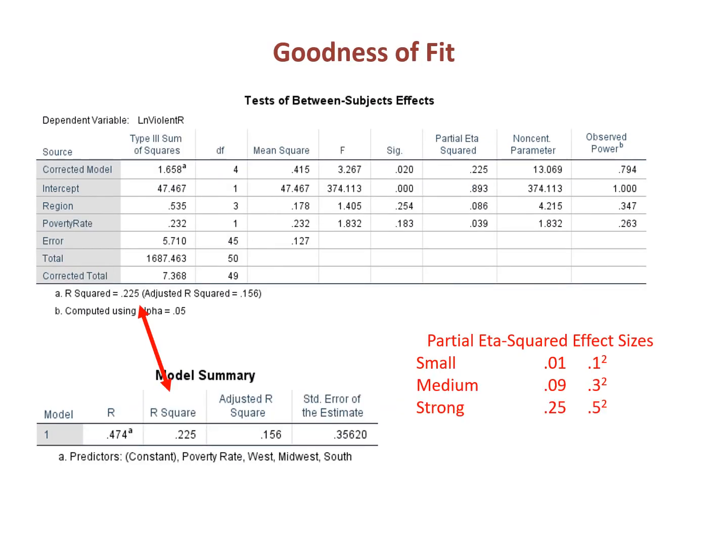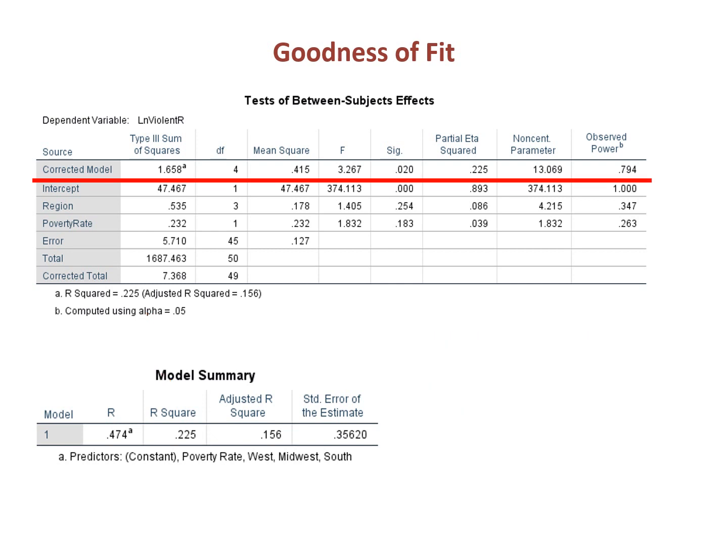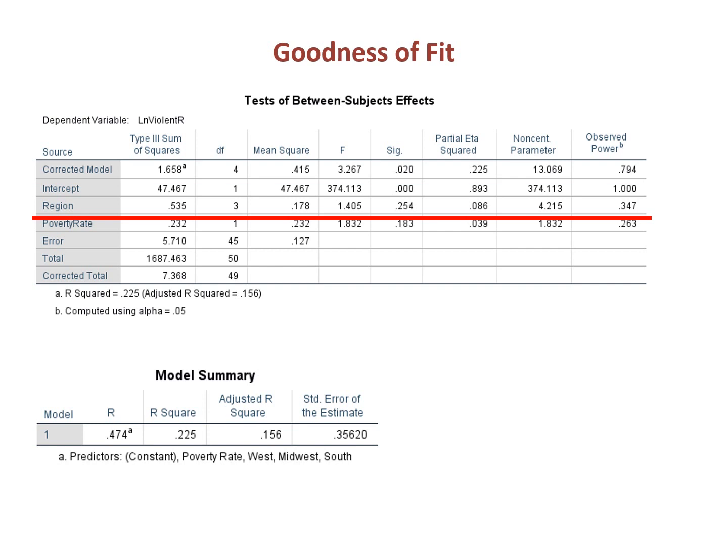The test of between-subjects-effects table is similar to the ANOVA table in regression, and its footnotes include the R-squared and adjusted R-squared. In the lower left-hand corner, I have included the model summary table from the regression model, and note the R-squared and adjusted R-squared are the same as the footnote for tests of between-subjects-effects. The significance of the fit of the model overall is summarized in the row-corrected model at the top of the between-subjects table; the statistical significance of 0.020 is the p-value for the overall model. This table also includes a partial eta-squared for the block of dummy variables in aggregate — in this example, there is a single row for all the region variables combined.